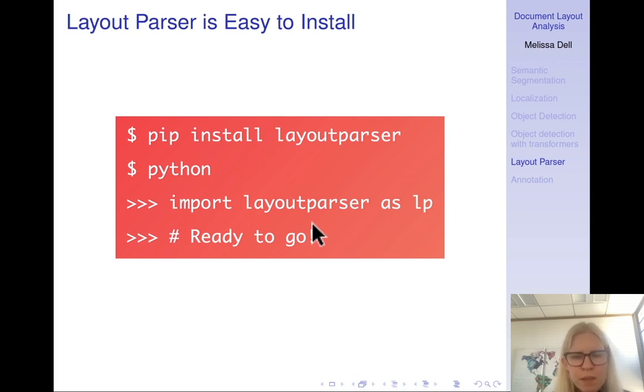Layout Parser has an off-the-shelf toolkit for applying deep learning models for layout detection, character recognition, and other document image analysis tasks. This is supported by a repository of pre-trained neural network models, or the model Zoo, that underlies the off-the-shelf usage. It has comprehensive tools for efficient document image data annotation and model tuning to support different levels of customization. The entire library is implemented with simple Python APIs. It's straightforward to install. As I think I've said before, do not install this on Windows. Don't do anything with deep learning on Windows. It's just not a good idea. You will make your life so much harder. If possible, please go do this on Colab. Deep learning is not meant to be done on Windows. If you do this on Colab or maybe some other cloud platform, you'll just save yourself a lot of effort of resolving dependencies.